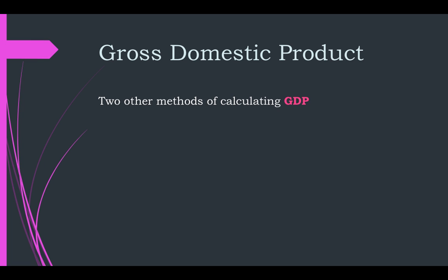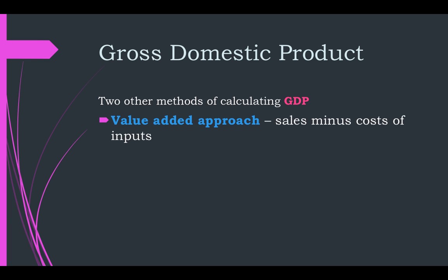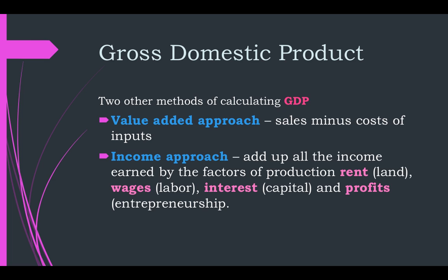There are two other ways of calculating GDP. You won't be asked to do these, but you should know they exist. The first is the value-added approach: all sales made in a country minus the cost of inputs needed to make them. Then there's the income approach: add up all the income earned by the factors of production — rent, wages, interest, capital — and that gives you national income, which is another way of calculating GDP. The thing you really need to know is CIGX. And that's Module 10. Thank you.